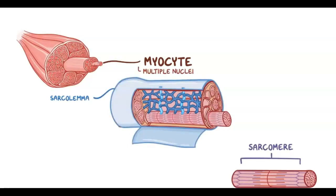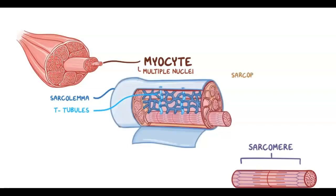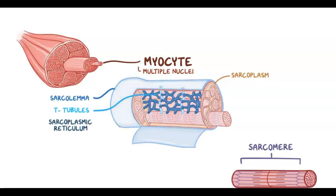The sarcolemma is unique because it makes these tiny tunnels called T-tubules that project downward from the surface towards the center of the muscle fiber. The cytoplasm of a myocyte is called sarcoplasm, and the myocyte has a special type of smooth endoplasmic reticulum, which is called sarcoplasmic reticulum.